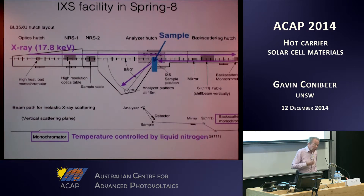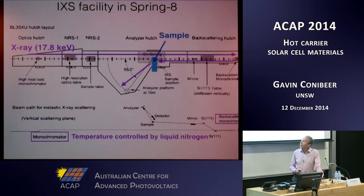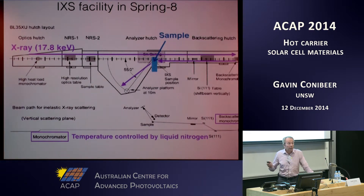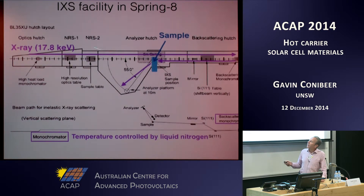You need very hard X-rays for this, and hence you need to go to a synchrotron — not just any synchrotron either. It has to be a very large synchrotron, and there are only three in the world: two in the States and the Spring 8 synchrotron in Hyogo, Japan. There are two beam lines doing IXS on the Spring 8 synchrotron. The photon energy is right up at 17.8 kiloelectron volts — the other beam line is even higher, around 19 or 20 kiloelectron volts. You need these very hard X-rays to get the very short wavelength.